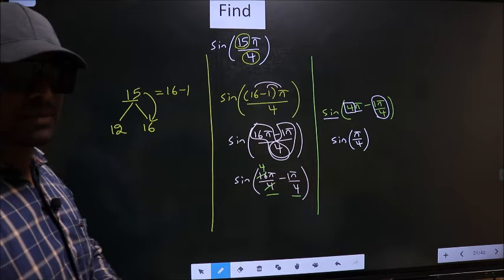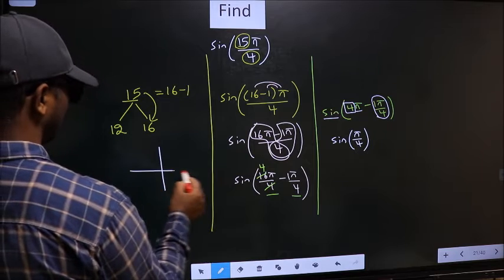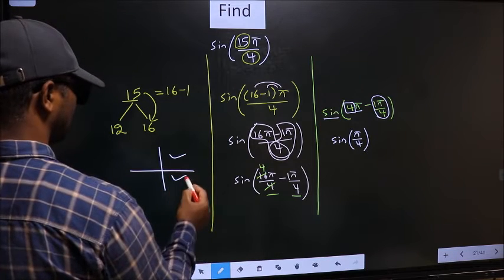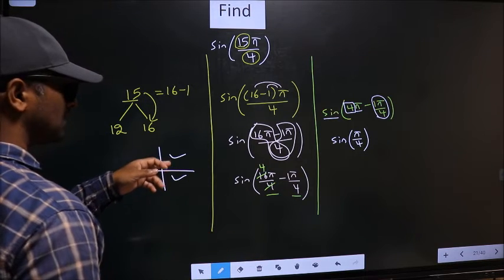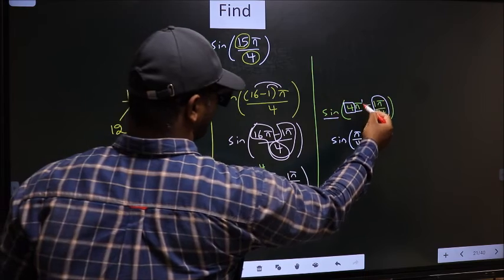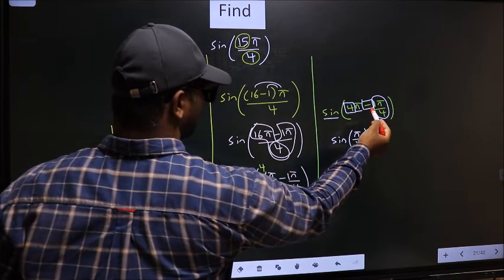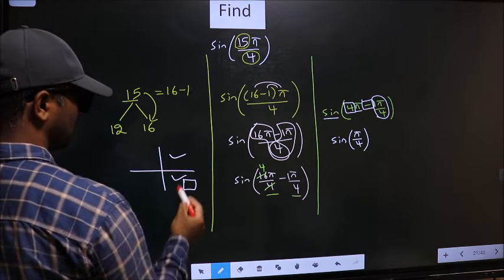All the even multiples of π, they lie in the first or in the fourth quadrant. Now to decide in which quadrant does it lie, we should look at this symbol. Here we have negative.